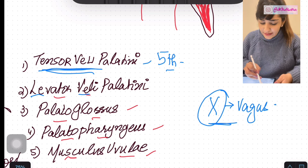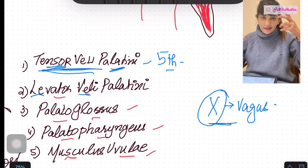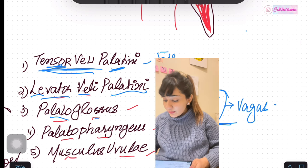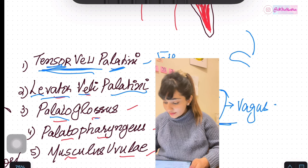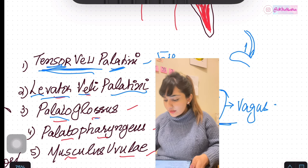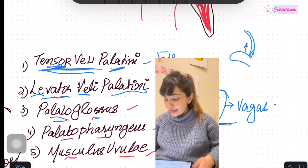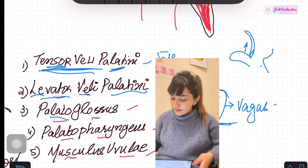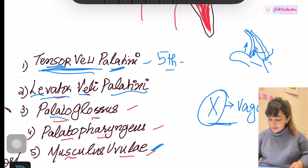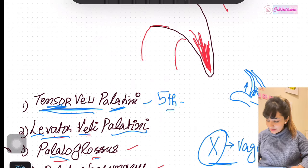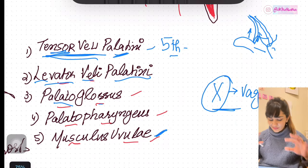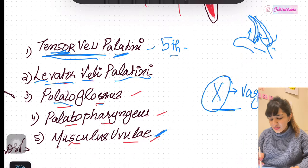Now the actions: tensor veli palatini tenses the palate; levator veli palatini elevates the palate; palatoglossus elevates the tongue, because it pulls the tongue upward from the palate; palatopharyngeus pulls the pharynx upward; and musculus uvulae pulls the uvula upwards so that you can swallow and food doesn't regurgitate into your nose. Those are the actions — very easy.